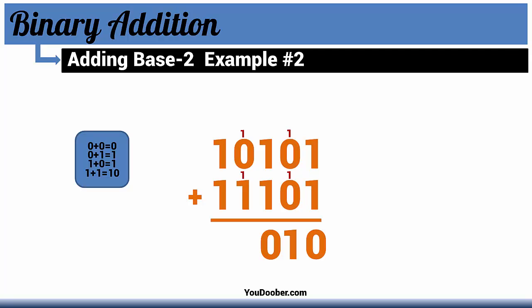1 plus 0 equals 1. 1 plus 1 is 0, 1. 1 plus 1 is 0, 1. So here we put our 0 down and carry our 1 to the next column. 0 plus 1 equals 1. And we have a single carried 1 left over. We can just bring that down.